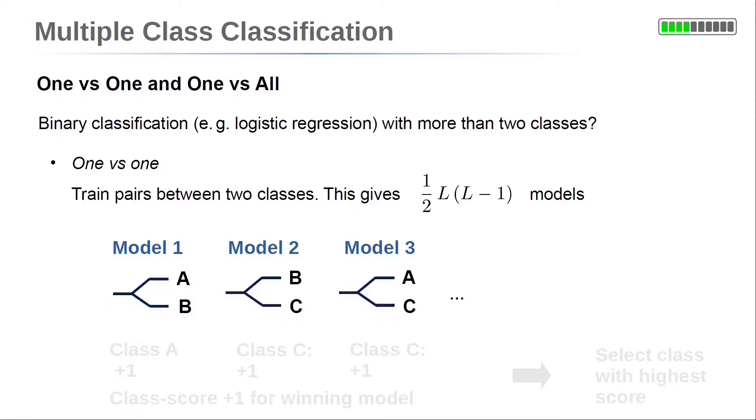Here, models are trained to decide between two of the capital L classes. So we have a model which can decide between class A and class B, another model for class B and class C, and so on. So each model compares one class against another. This is why this approach is called one versus one.